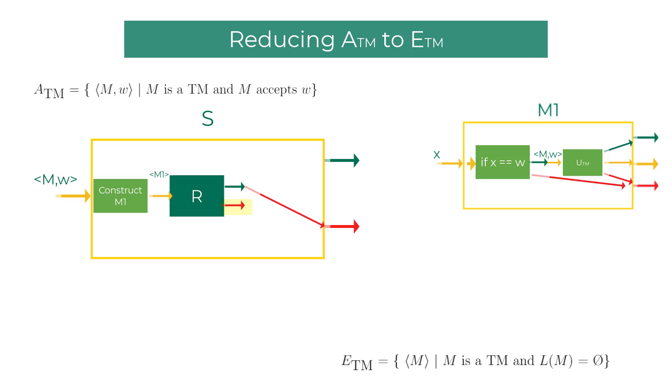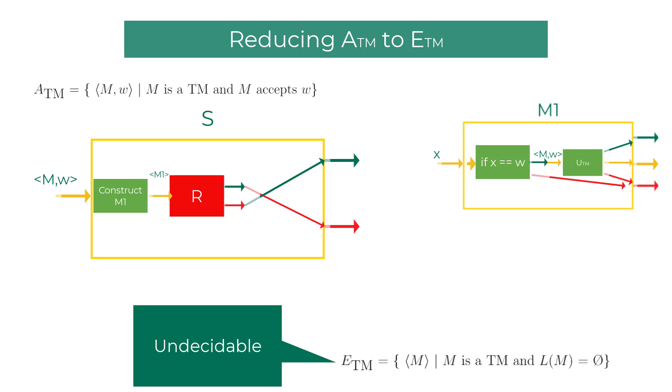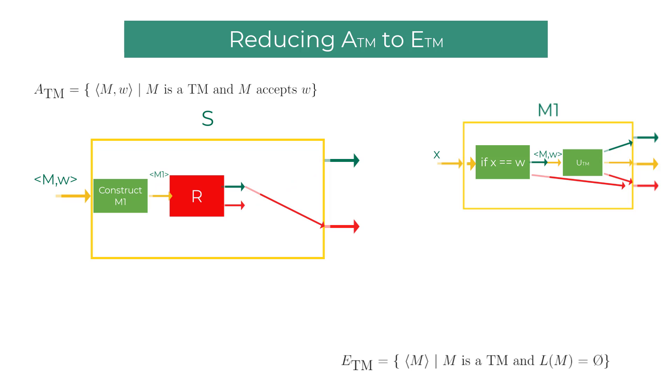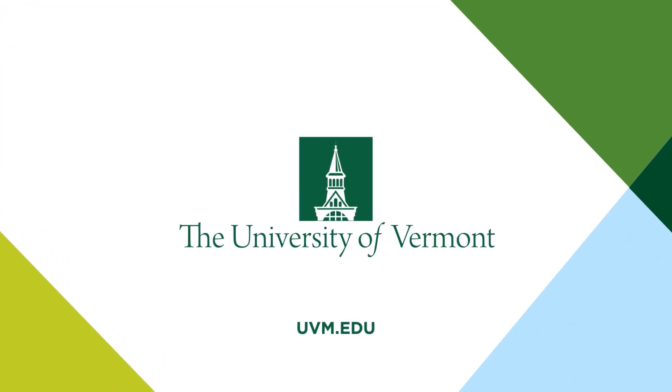I will connect the reject state of R with the accept state of S. There you go, we just built a decider S for ATM problem using ETM decider R. As a decider for ATM cannot exist, the decider for ETM should not exist. ETM is undecidable. Reading the textbook proof is mandatory to really understand this proof. Rewatch this video again after reading the textbook proof.